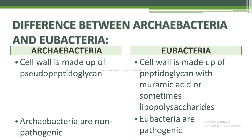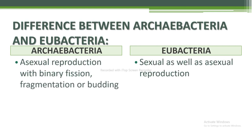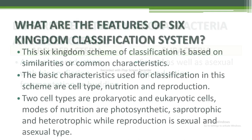Archaebacteria are non-pathogenic, while Eubacteria are pathogenic. Regarding reproduction: Archaebacteria reproduce asexually by binary fission, fragmentation, or budding; while Eubacteria undergo both sexual and asexual reproduction.